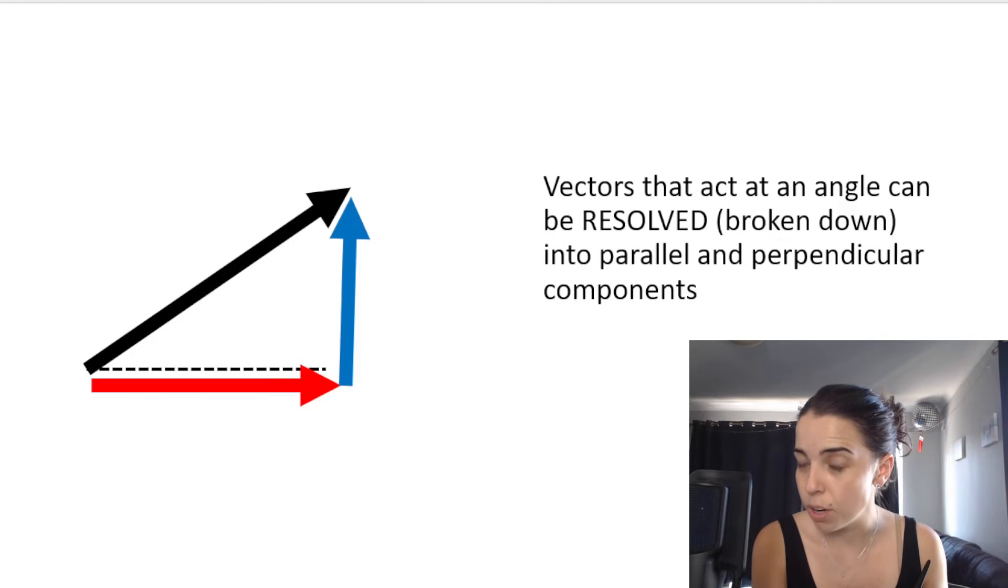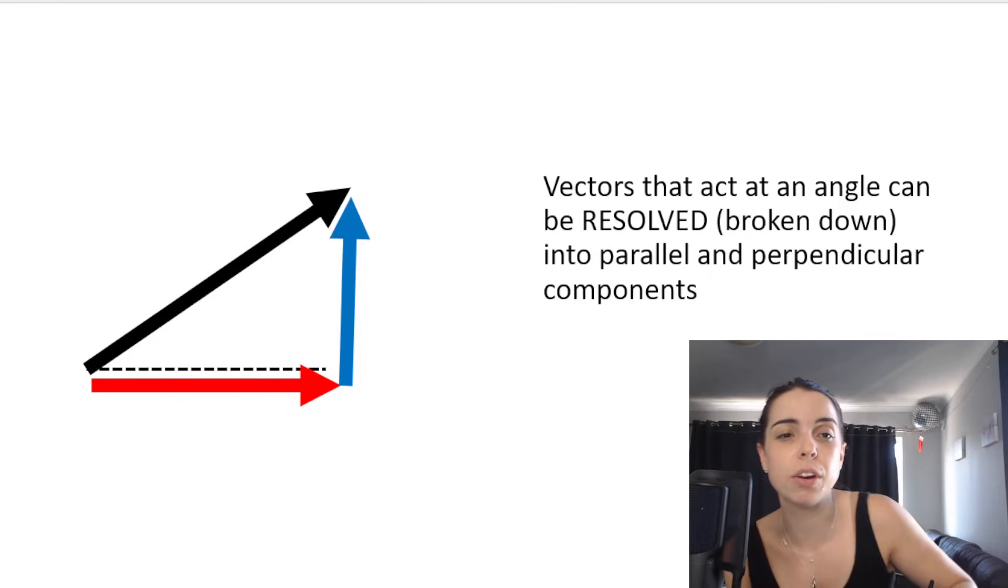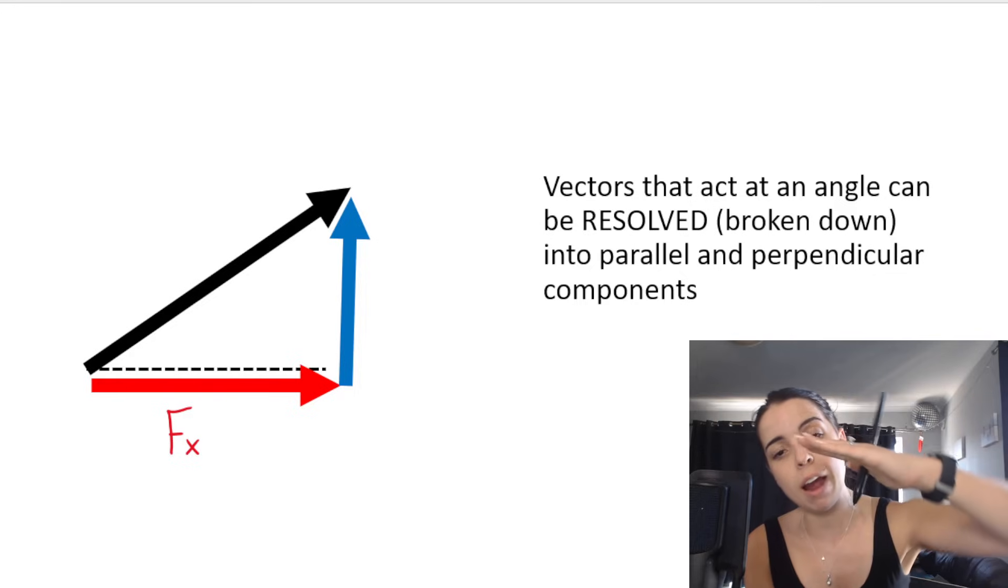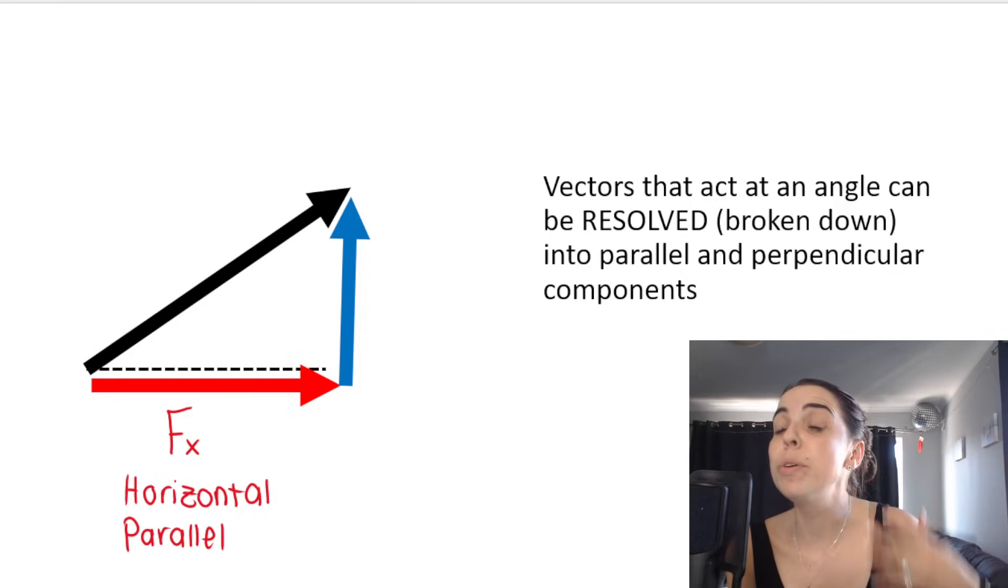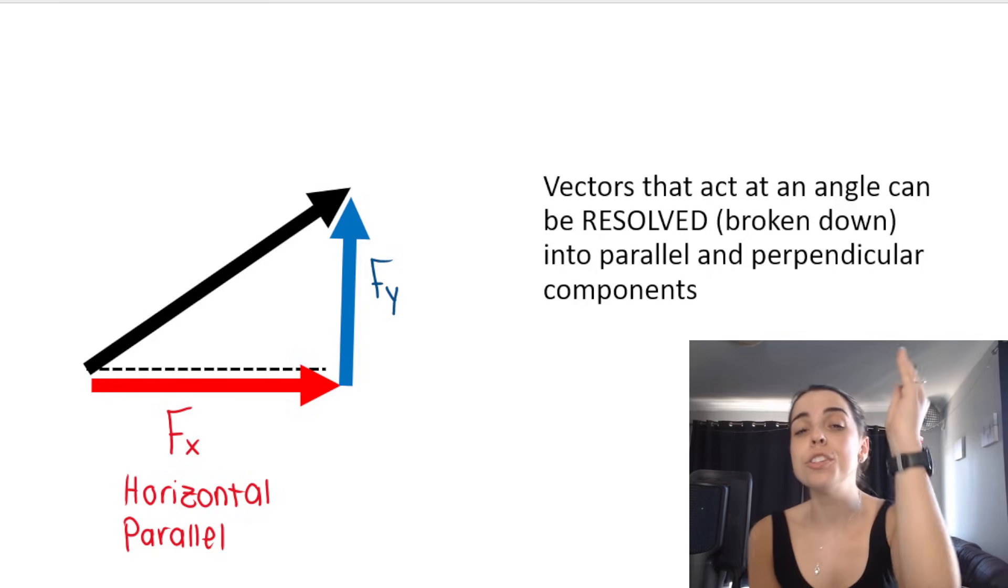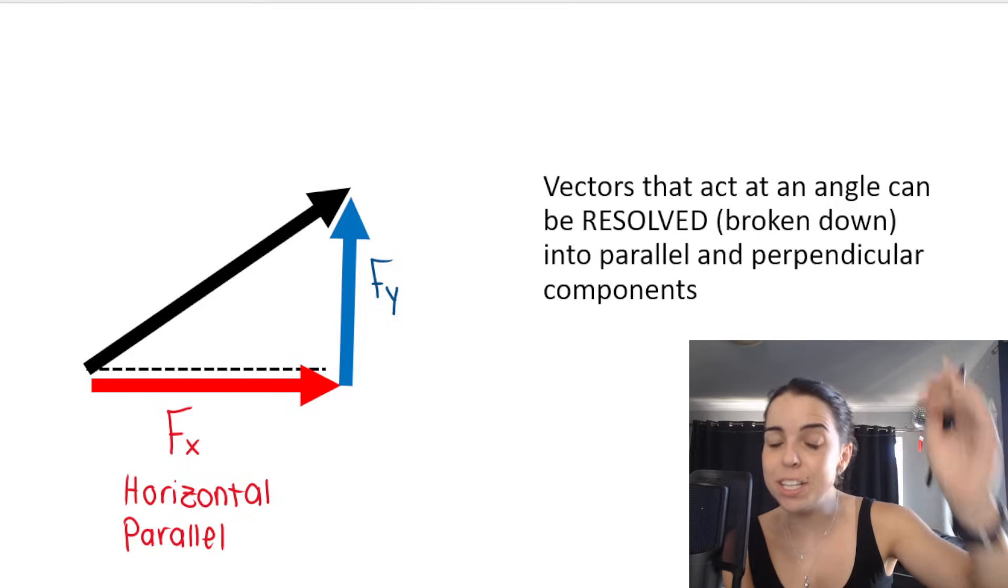When I break it up into components, I will have two components. One component that is going to the right—that is called fx, or the horizontal component, or the parallel component. And then we've got fy, which is this one that is pointing up, also known as the vertical or the perpendicular component.